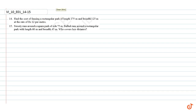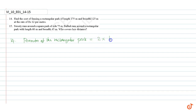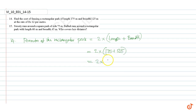Perimeter of the rectangular park is equal to 2 into (length plus breadth), which is equal to 2 into (175 plus 125), equal to 2 into 300, equal to 600 meters.